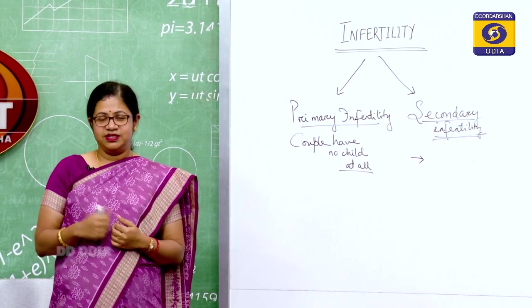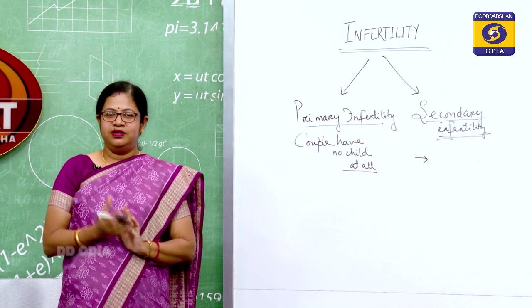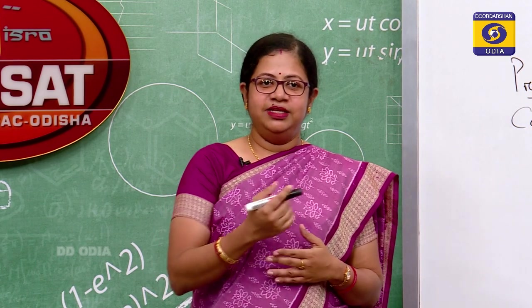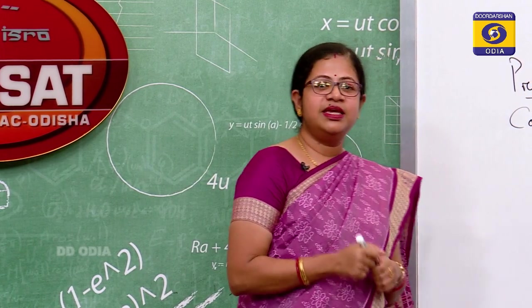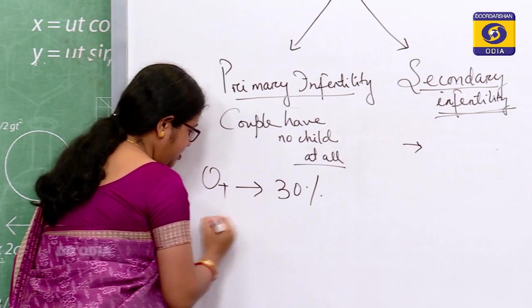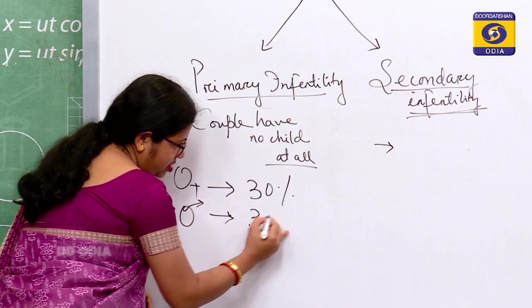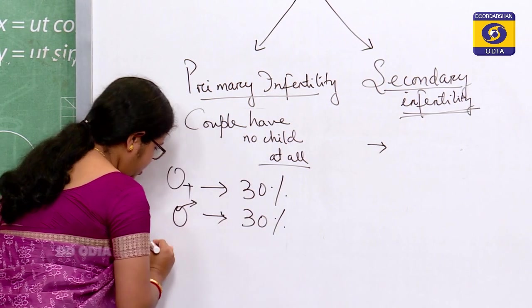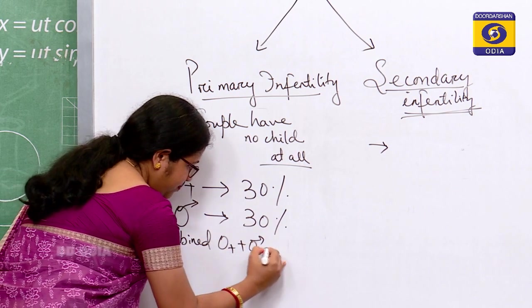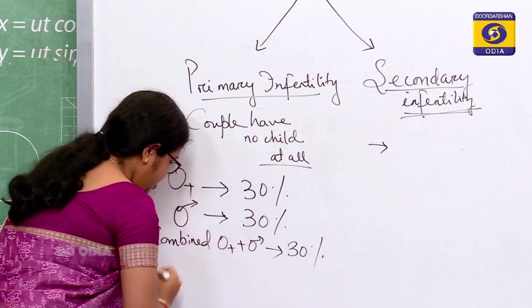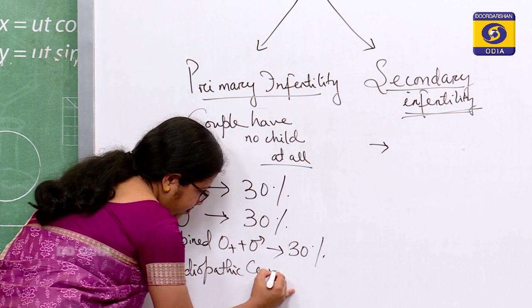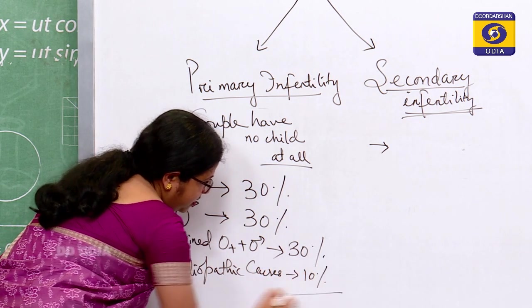Infertility can be accounted to both the mother and the father. Female factors can contribute to 30 percent, male factors can contribute to 30 percent, combined male and female factors can contribute to 30 percent, and idiopathic causes can contribute to the remaining 10 percent. So we cannot just blame the mother or the father exclusively for infertility.